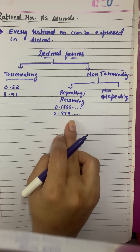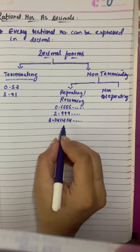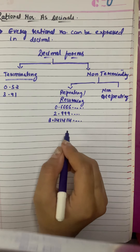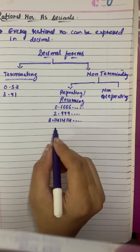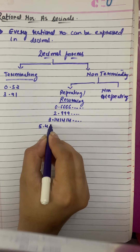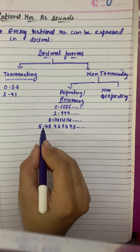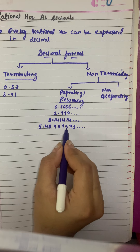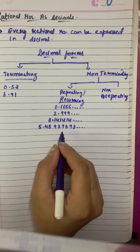Now the question is: does it mean only one digit can repeat? The answer is no. Something like 3.14141414 and so on will also be a repeating or recurring decimal number — here two digits after the decimal are repeating. Also, does the repeating part have to start immediately after the decimal? Again, the answer is no. For example, 5.45939393: immediately after the decimal, the digits 4 and 5 are not repeating, but the digits following them — 939393 — are repeating. So it's not necessary that the repeating part starts immediately after the decimal.